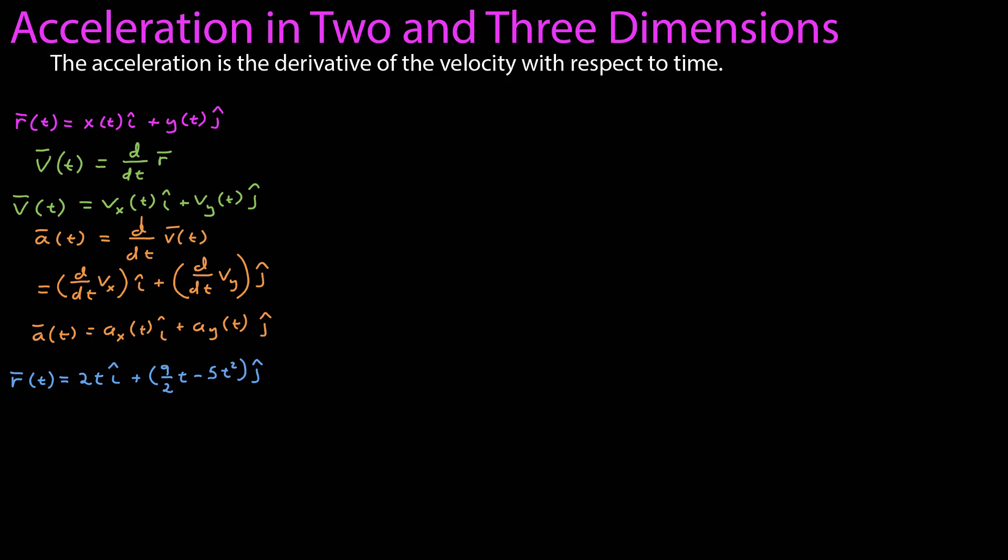Previously, we had a position vector that looked like this. By differentiating that, we found the velocity vector, and in this case, the x component was a constant, 2i-hat, while the y component still varied with respect to time. If we differentiate that to find the acceleration vector, we're just left with negative 10 j-hat.